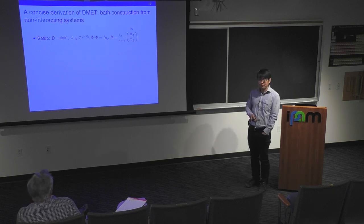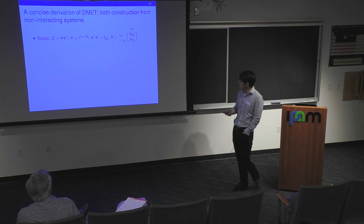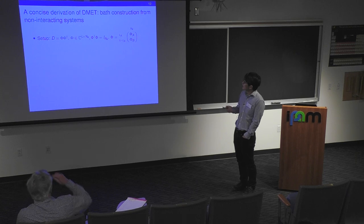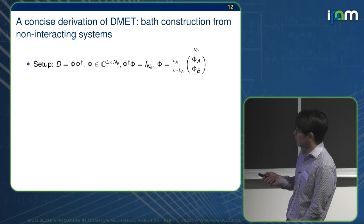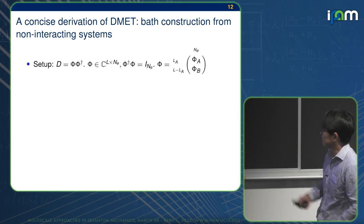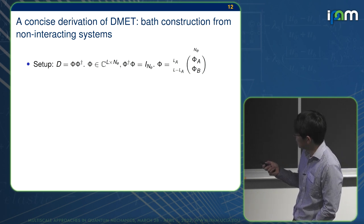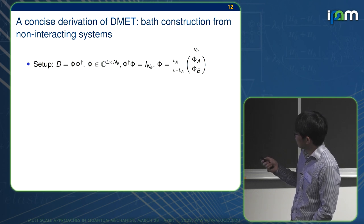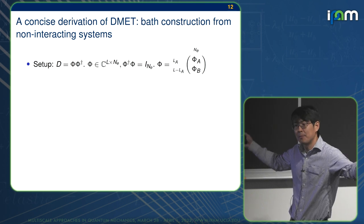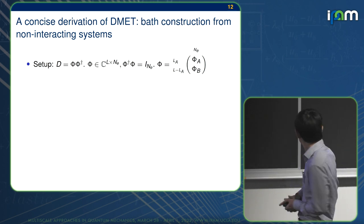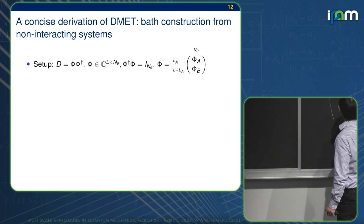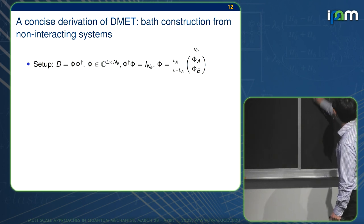Here is a concise derivation of DMET for a more algorithmic or mathematical audience. It is based on the so-called bath construction from non-interacting systems. And the setup is that you look at the one RDM, the single particle reduced density matrix, equals to Phi Phi star. And this Phi is of size L by Ne, is a Stiefel matrix. And it satisfies normalization condition. You partition this Phi into two parts. La is literally M. So it's a very small number, but Ne can be large. So this is the partition of the matrix. This can be large, La equal to M. This is very tiny, and the whole thing is L, which is huge. So this is the idea.